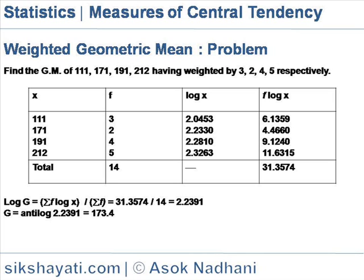So log G equals sigma(f·log x) divided by sigma(f), which equals 31.3574 divided by 14, equals 2.239. Therefore G equals antilog of 2.239, which equals approximately 173.4.